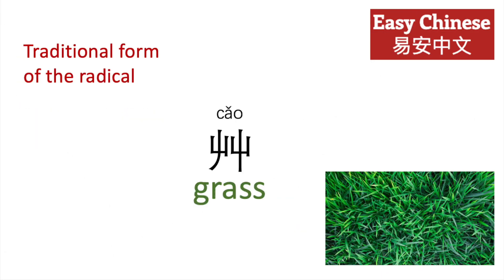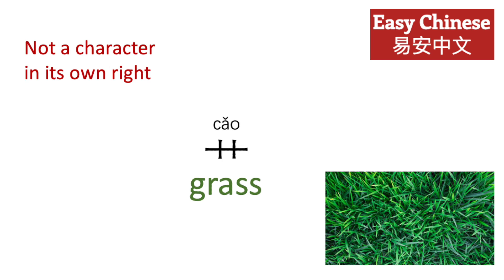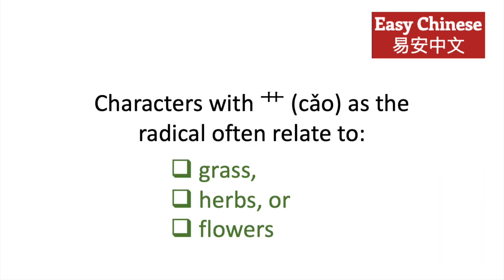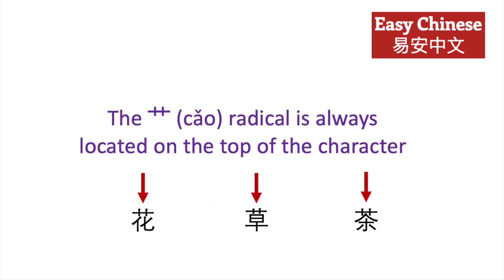This is the traditional form of the radical. The radical is not a character in its own right. Characters with Cao as the radical often relate to grass, herbs or flowers. The Cao radical is always located at the top of the character.